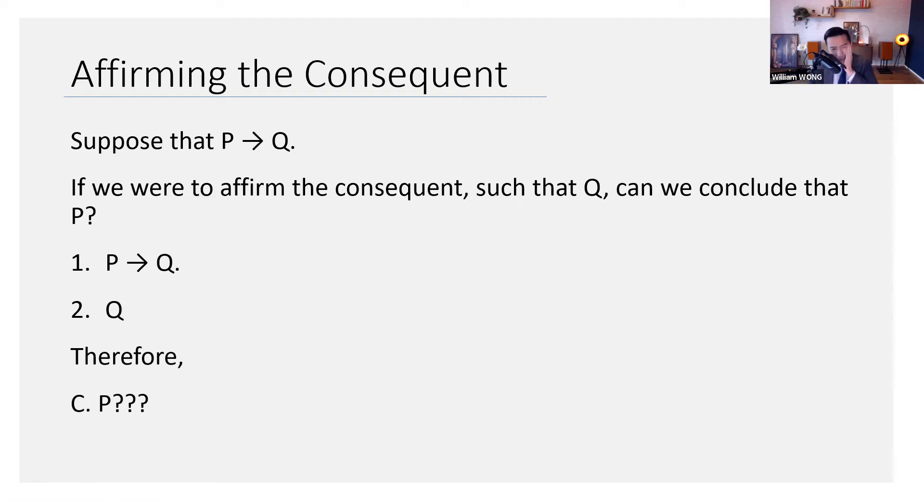Well, I mean, P could be the case, but you don't know that. You don't know. You can't infer on the basis of these two premises because there might be other routes to Q, for example, W.